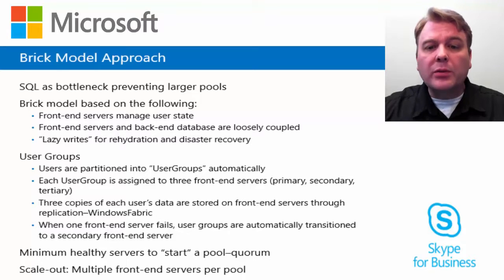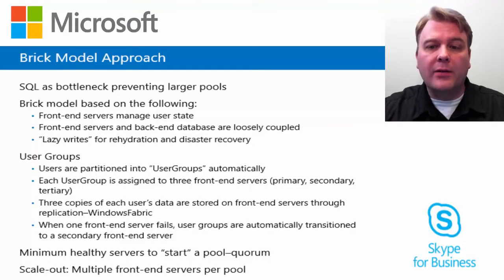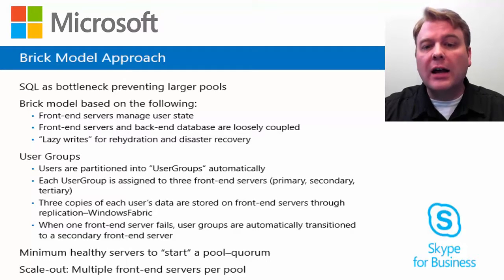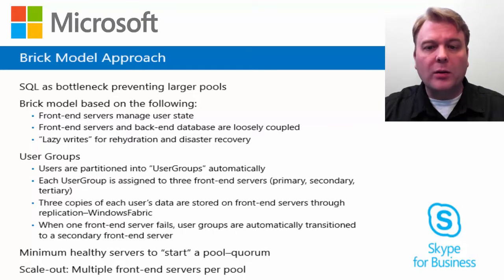User states are copied between the front-end servers in a pool directly. Each user belongs to a specific user group, and a three-server peer pool holds a copy of the data of each user group. If one of the servers is not online anymore, the secondary or tertiary server will automatically take over for the user group. To always have at least one server per user group available, you require a minimum quorum per pool.